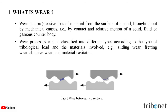We should know what is wear. Wear is a progressive loss of material from the surface of a solid brought about by mechanical causes, that is by contact and relative motion of a solid, fluid or a gaseous counter body. In figure 1, we can see two bodies which are in contact with each other and are in motion in opposite directions. Due to the roughness of the surface, the material is being disintegrated on the surface. This phenomenon is one example of wear.